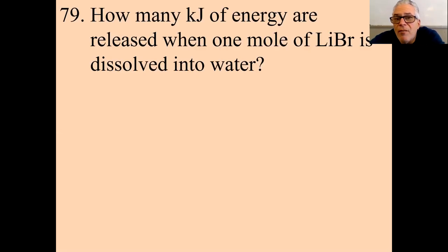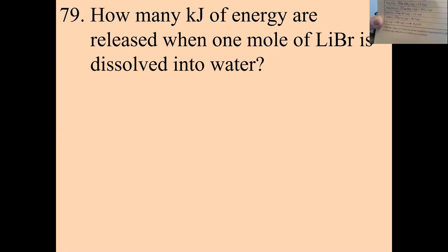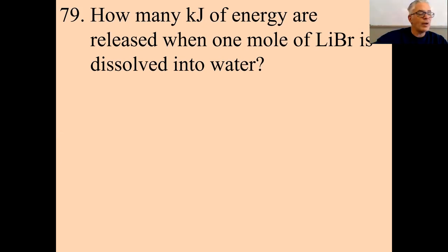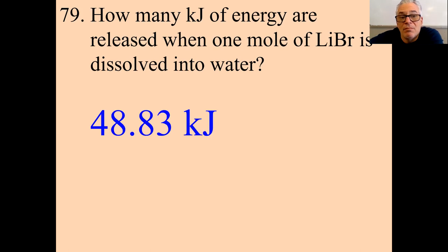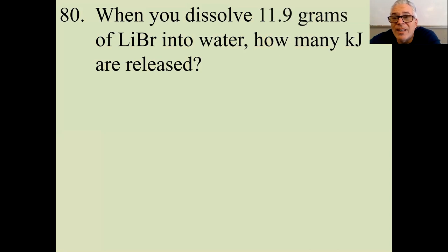How many kilojoules of energy are released when one mole of lithium bromide is dissolved in water? Table I. Lithium bromide is the second from the bottom — see it? Lithium bromide goes into water, forms lithium cations and bromine anions, and the delta H is negative 48.83 kilojoules. That's the answer. That was easy — just put your finger in the box. But the next question is where it gets a little more dicey and fun.